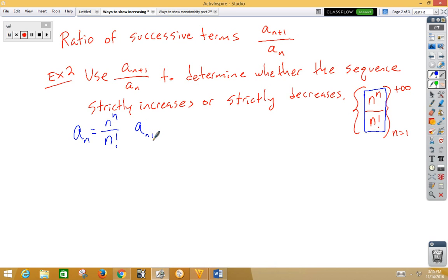So a sub n plus 1, we need to replace all the n's with n plus 1's. So we have an n plus 1 to the n plus 1 over n plus 1 factorial.